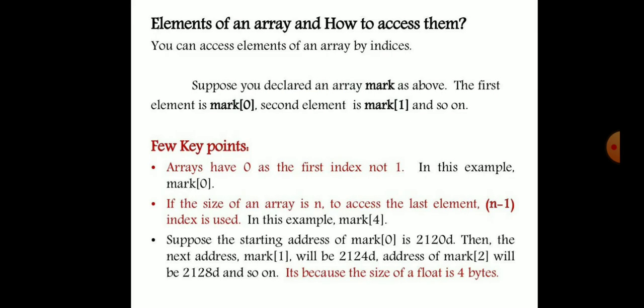The elements of an array are accessed by indices. Key points: the array index always starts from 0, not from 1. If the size of the array is n, then to access the last element we use index n minus 1. For example, if the starting address of mark[0] is 2020, then the next address of mark[1] will be 2024, because the size of float is 4 bytes.